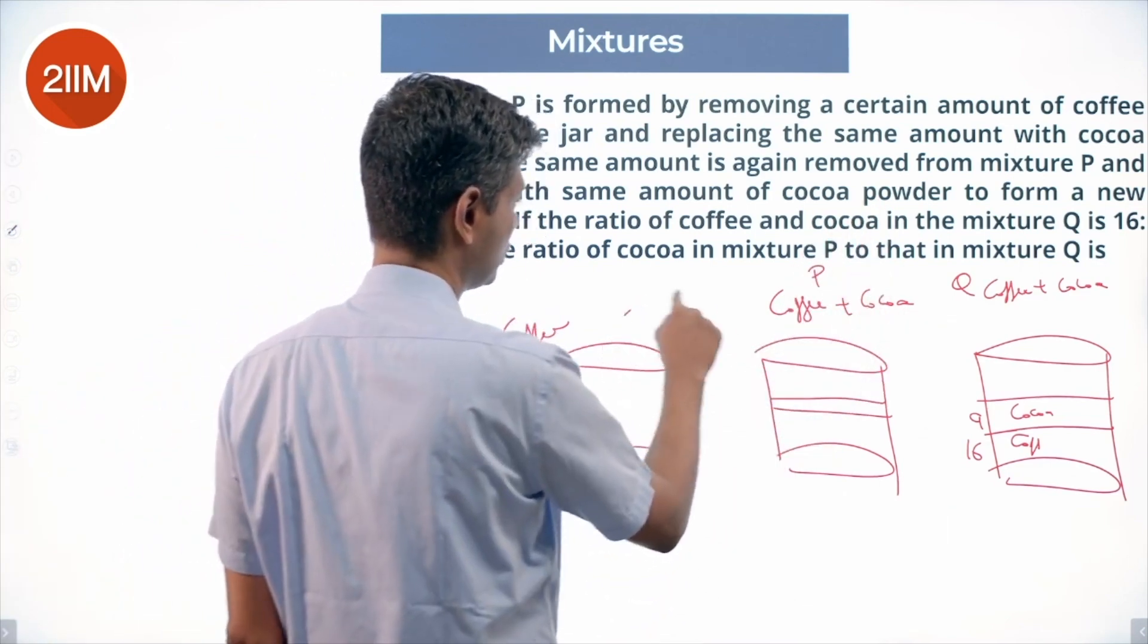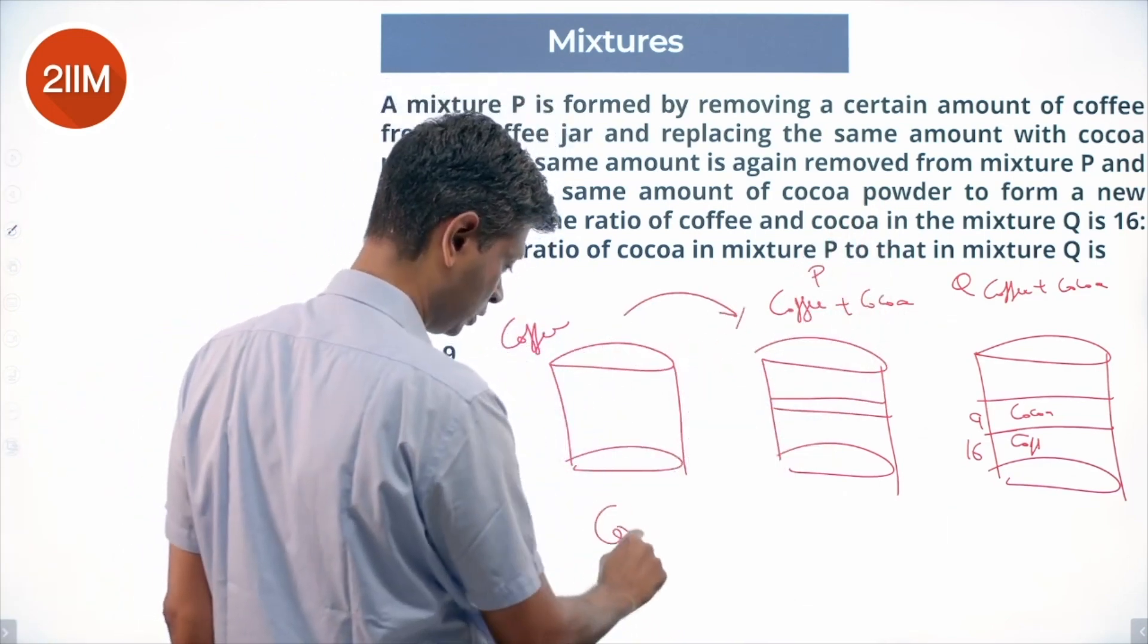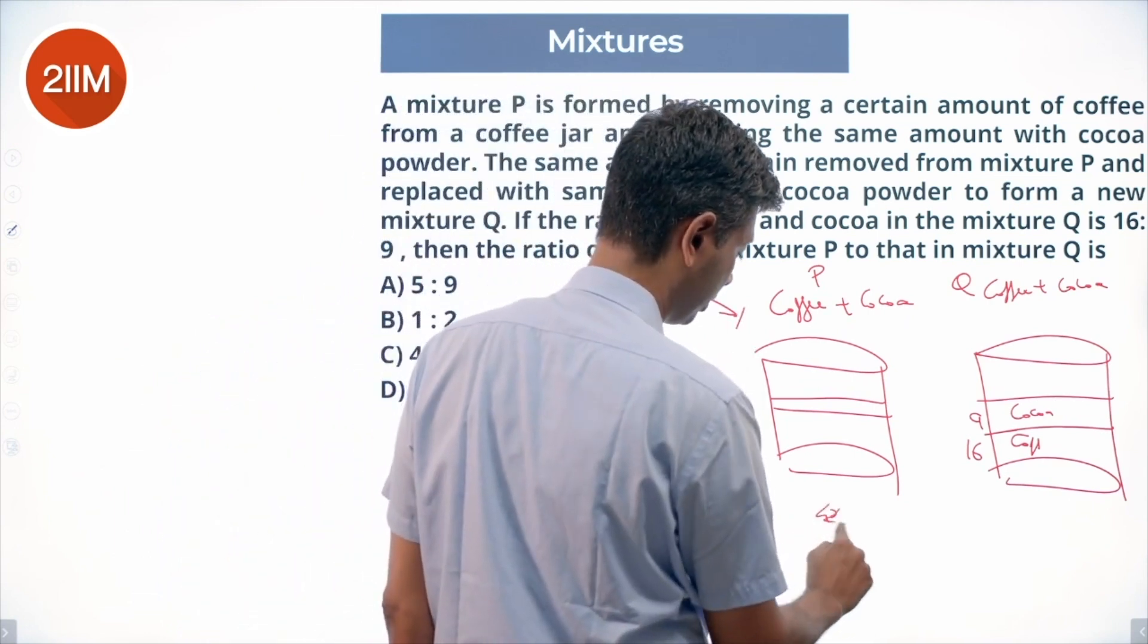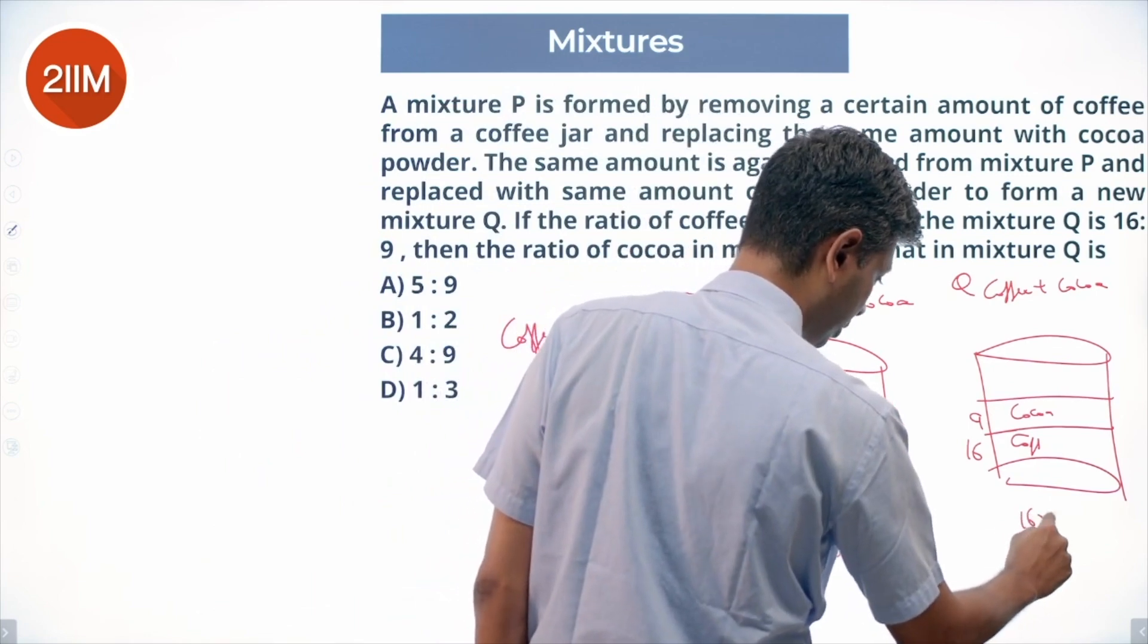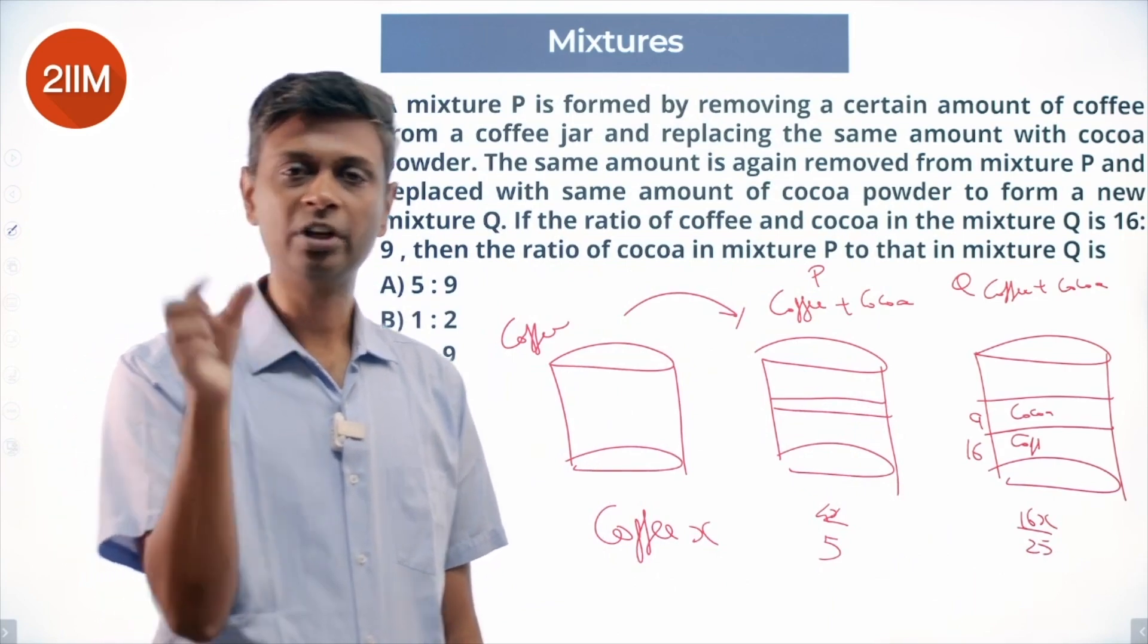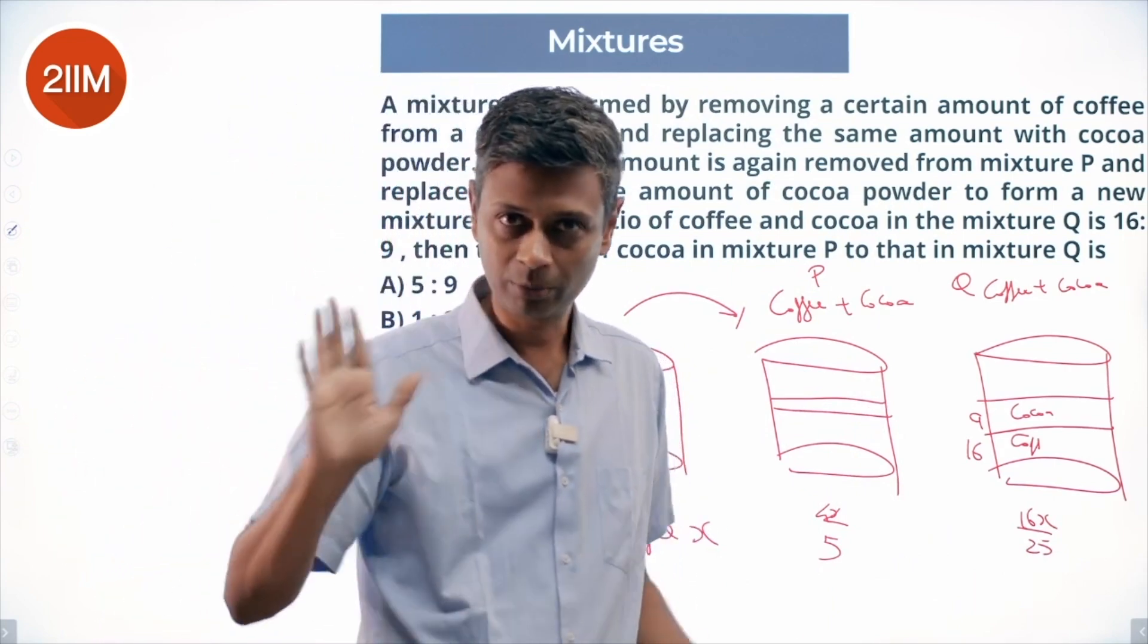So here, coffee - if I had x units of coffee, at this step I have 4x/5, at this step I have 16x/25. I am removing 1/5th of the mixture and replacing it with cocoa. That's all I am doing.